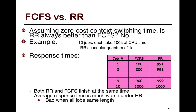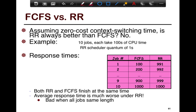What we're going to do now is compare FCFS with round-robin in order to directly study the trade-offs for a specific type of system. Assuming zero context switching cost, the question is: is round-robin always better than FCFS, even if you assume zero cost? And the answer is no, it's not.